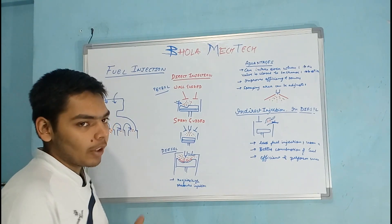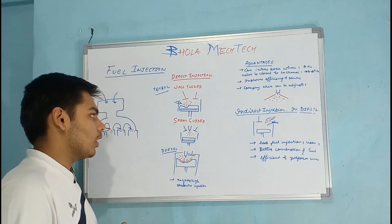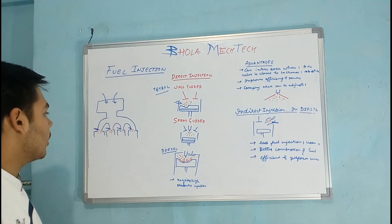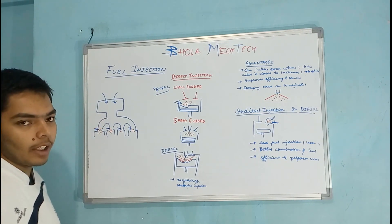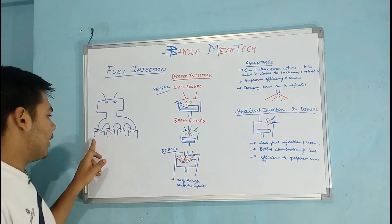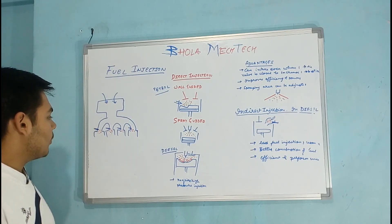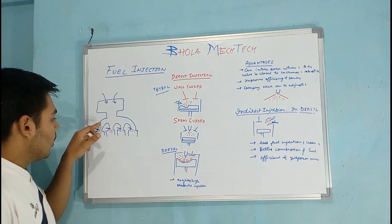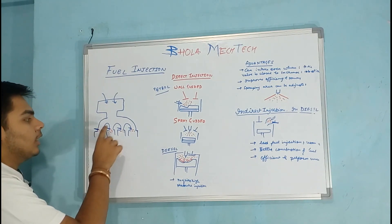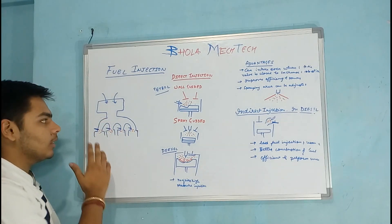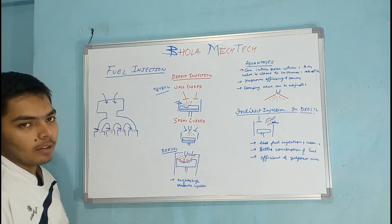In petrol engines, in the indirect injection system, the injector is placed inside the carburetor — you may say carburetor or throttle body — or the injector may be placed in the inlet manifold just before the cylinder or at the beginning of the inlet manifold. This is known as the MPFI system, that is multi-point fuel injection. If a single injector is placed there instead of four separate injectors, this will be SPFI. So this is the indirect injection system in petrol engines.